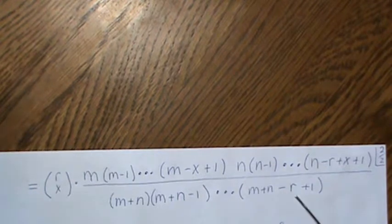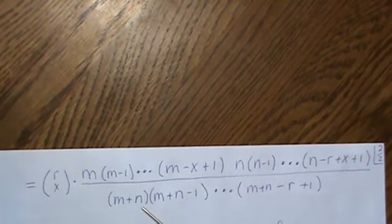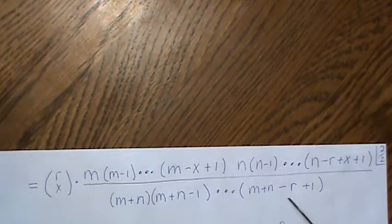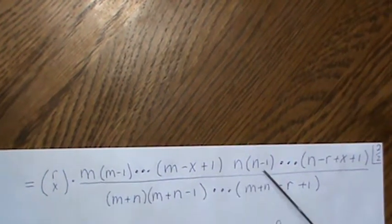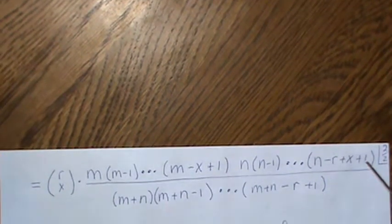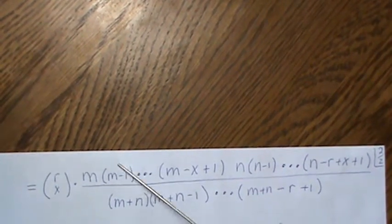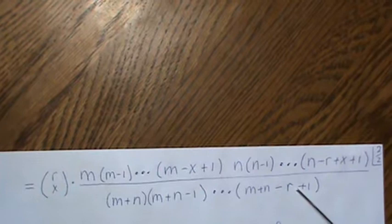Well, if you look at how many terms we have in the bottom, we have r terms. Here we have x terms, and then here we have r minus x terms. So it totals to r terms and r terms.